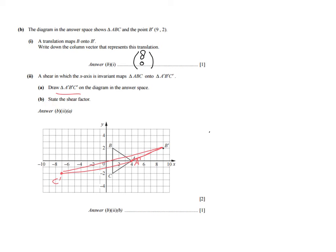Then the last question: state the shear factor. The shear factor is the horizontal move divided by the perpendicular distance between a point and the invariant line. So: how many units does it move horizontally? Well, 8 — we already know that. So 8 over the perpendicular distance to the invariant line, which is 2. So 8 divided by 2 — the shear factor is 4.